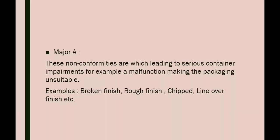The second category is major A. These non-conformities are those leading to serious container impairment — for example, a malfunctioning making the packaging unsuitable. Examples under the major A category are broken finish, rough finish, chipped or line over finish, etc.